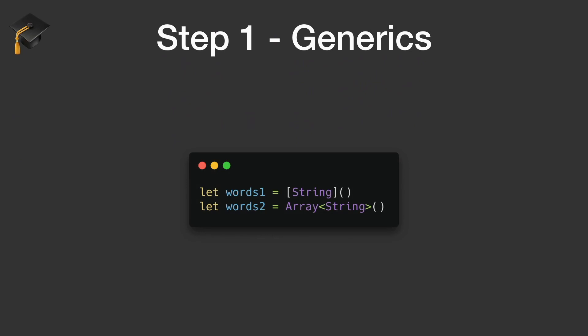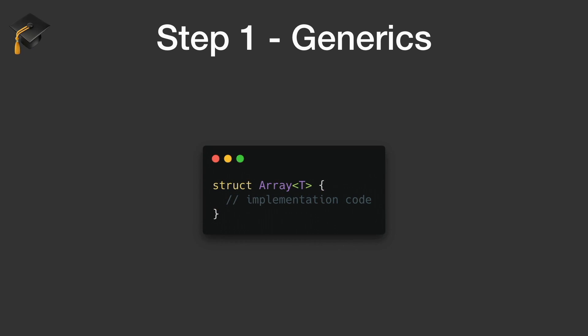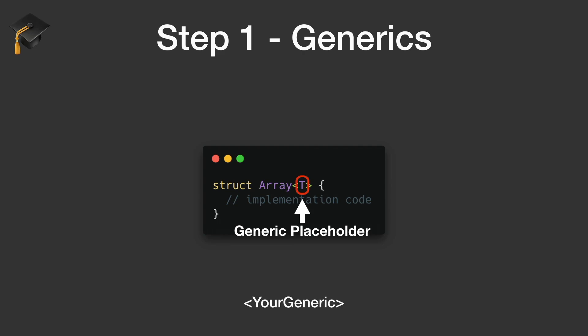Let's take it step by step and look at generics first. This is creating an array, and that right there is a generic — it's an array that is generic over String. If you look at what an implementation of an array might look like, it could be this array with a generic property T, where T could be anything. It's a generic placeholder, a made-up type, and it's always put between angle brackets.